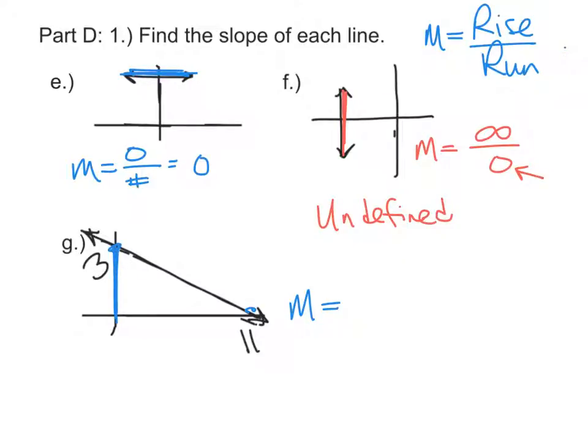Since it started at 3 and goes down to the origin, it rises a negative 3. And how far does it run? Well, it goes from 0 out to 11, so it has a run of 11.